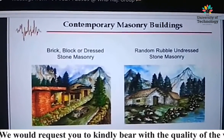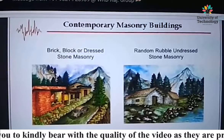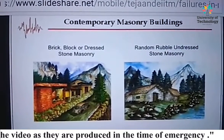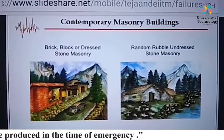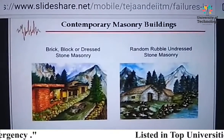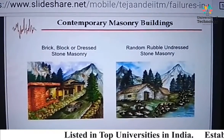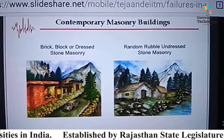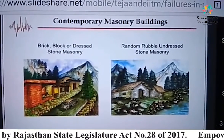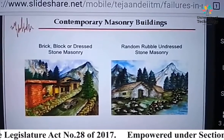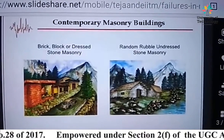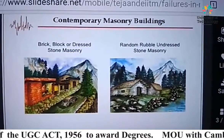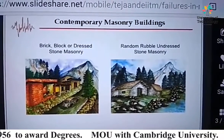There are two types or two categories of masonry buildings. One is constructed by brick, block, or dressed stone masonry — where dressing of stone is done. Another is random rubble and undressed stone masonry, also known as RR undressed stone masonry.